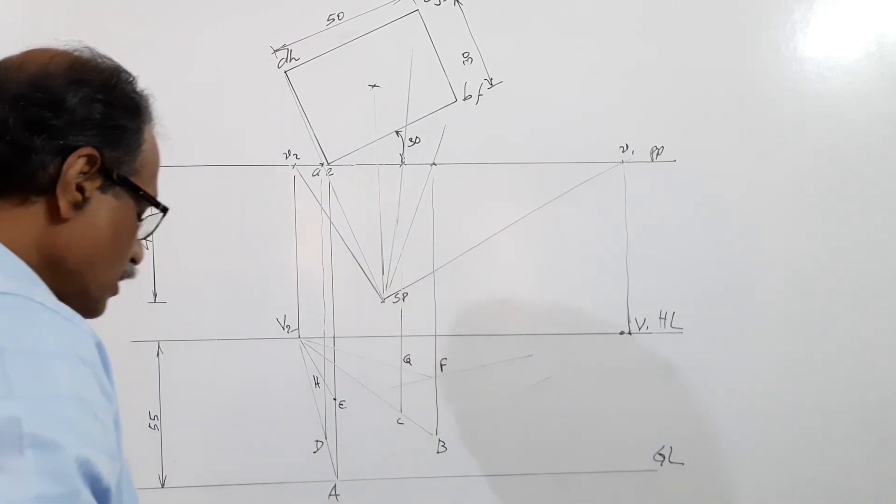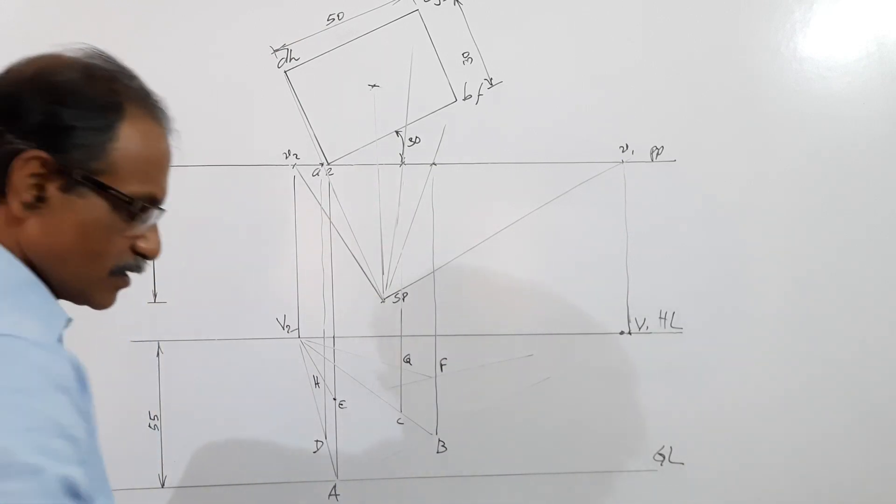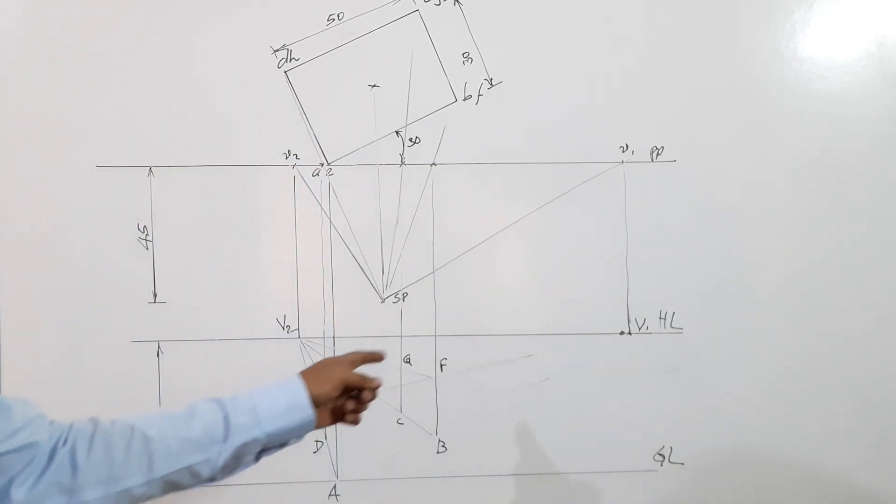You have got all the eight points: A, B, C, D at the bottom, E, F, G, H on the top. Now you can connect them.